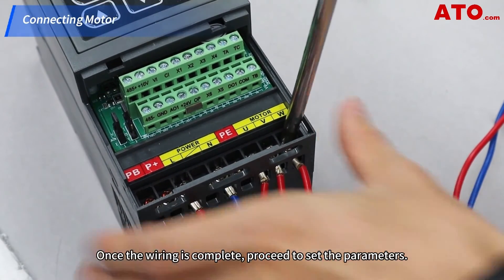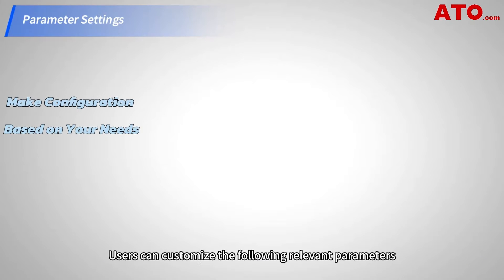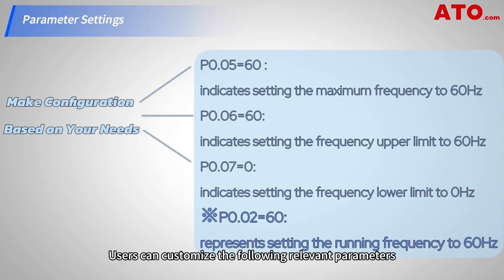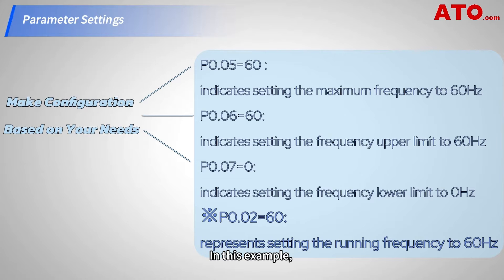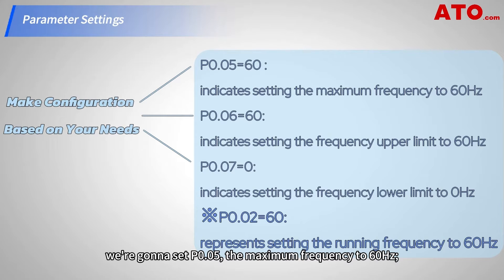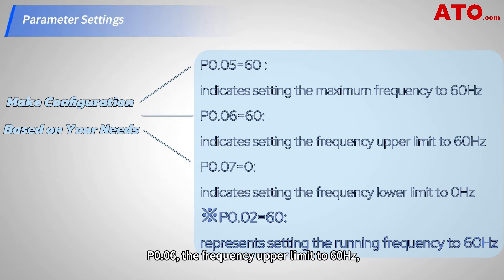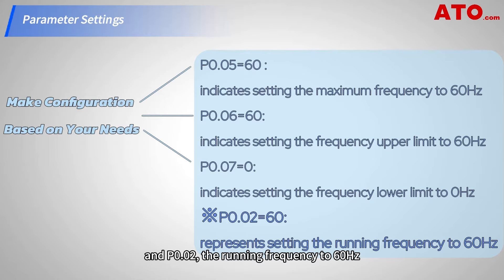Once the wiring is complete, proceed to set the parameters. Users can customize the following relevant parameters based on specific requirements. In this example, we're going to set P0.05 the maximum frequency to 60 Hz, P0.06 the frequency upper limit to 60 Hz, P0.07 the frequency lower limit to 0 Hz, and P0.02 the running frequency to 60 Hz.